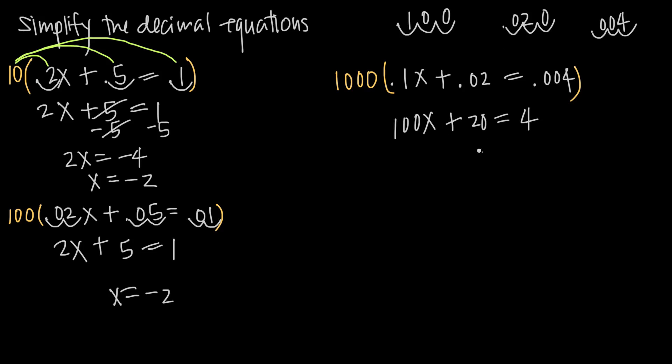Now we can just go ahead and solve for x. We'll subtract 20 from both sides, and we'll get 100x, positive 20 and negative 20 will cancel. 4 minus 20 is a negative 16, so negative 16.